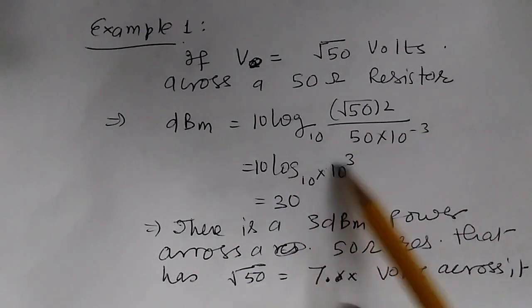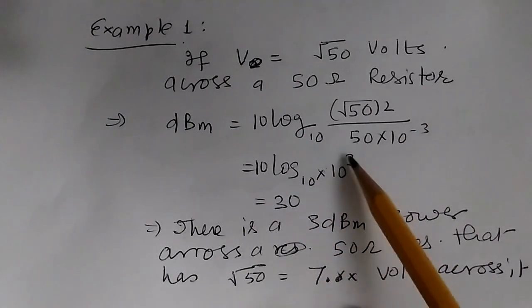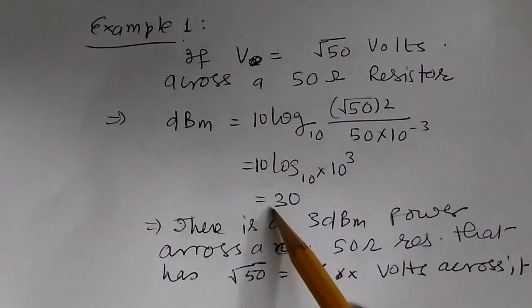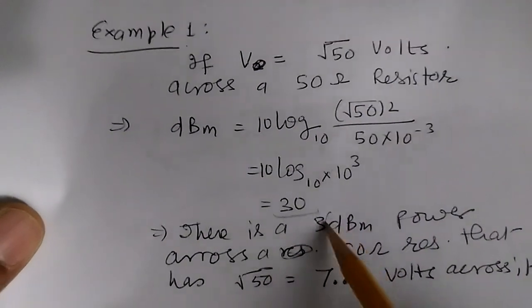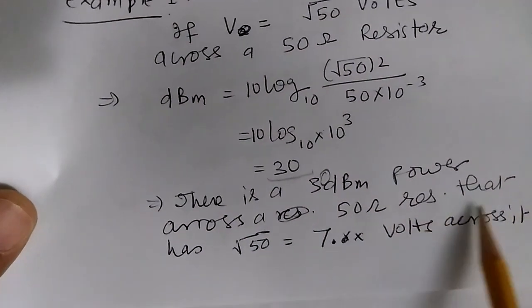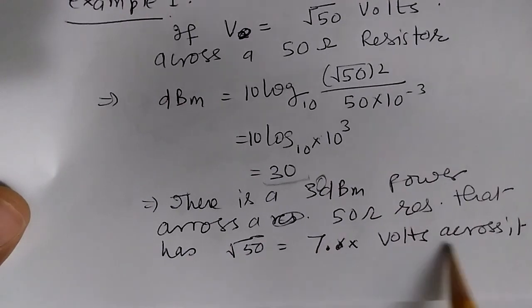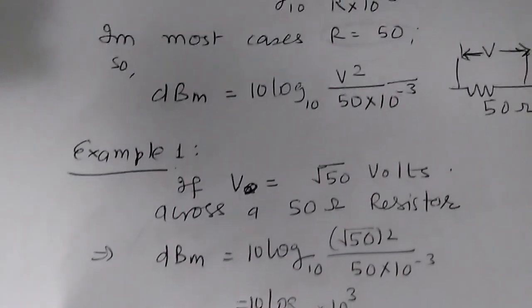10 to the power minus 3 goes up and becomes 10 to the power 3. Log₁₀(10³) equals 3, times 10 equals 30. So we say there is 30 dBm power across a 50 ohm resistor that has about 7 point something volts across it. This is the conversion of voltage into dBm.